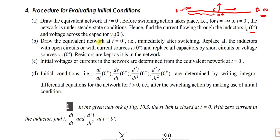That means you have to find I_L(0⁻) if there is an inductor, and V_C(0⁻) for a capacitor. For an inductor, you find the initial current; for a capacitor, you find the initial voltage. Next, you have to draw the equivalent circuit at t = 0⁺.